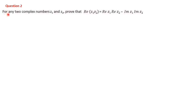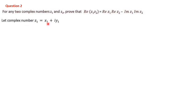Next, we shall discuss question number 2: For any two complex numbers z1 and z2, prove that Re(z1·z2) = Re(z1)·Re(z2) - Im(z1)·Im(z2). Here, something related to the real and imaginary parts — the two components of a complex number. We can take the RHS calculation first since there is only a little computation needed.